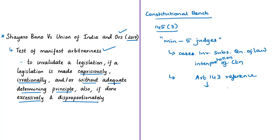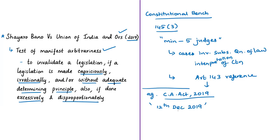These Supreme Court observations have been highlighted by petitions filed against the Citizenship Amendment Act of 2019, which received the assent of the President on 12th December 2019. One important provision being challenged is that any person belonging to Hindu, Sikh, Buddhist, Jain, Parsi, or Christian community from Afghanistan, Bangladesh, or Pakistan who entered India on or before 31st December 2014 shall not be treated as an illegal migrant for the purposes of the Citizenship Act 1955.